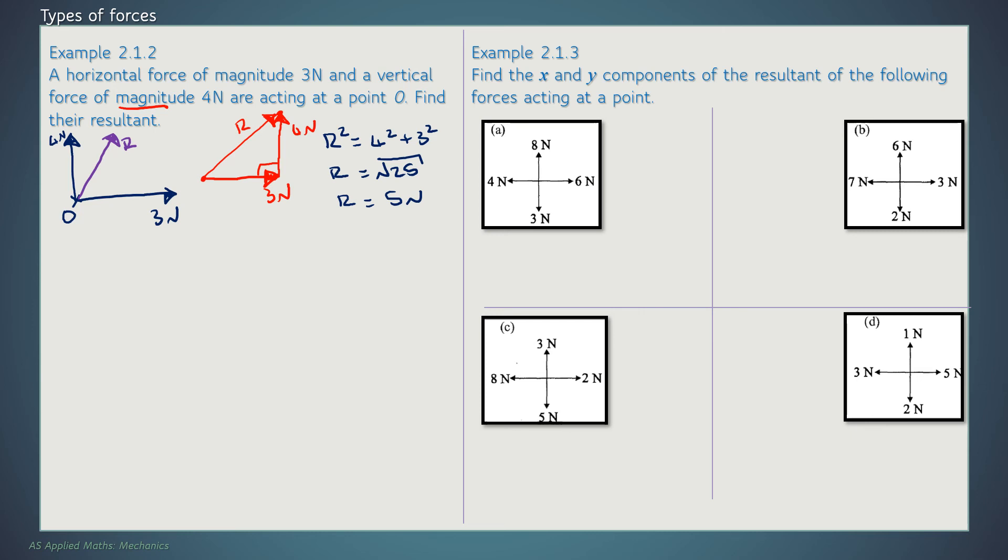Sometimes you are asked for the direction. If you're asked for the direction, then it is that angle that you're looking for. And because we know the force three and four, it is trigonometry. So we're going to use tan is equal to opposite over adjacent. Which gives me tan to the minus one of four over three is equal to theta. Calculating that, we've got 53.1 degrees. So we would say that our resultant force is acting at an angle of 53.1 degrees above the horizontal.